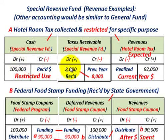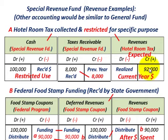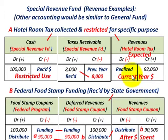So we had the $8,000 receivable from the previous year plus the $92,000 realized in the current year. The key is revenues for the particular period — those are what you're going to recognize for the current year — but the total cash of $100,000 can be used for whatever the specific purpose is.